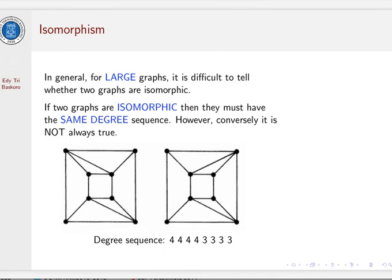In general, for large graphs, it is difficult to tell whether two graphs are isomorphic. But we know that if two graphs are isomorphic, then they must have the same degree sequence. However, conversely, it is not always true.